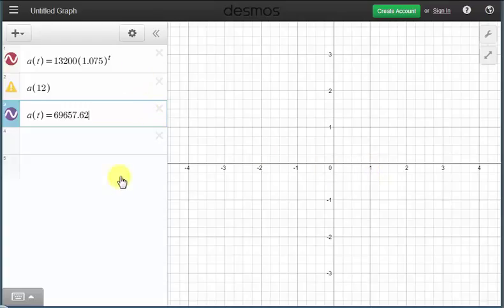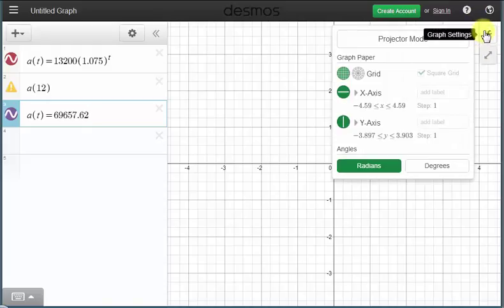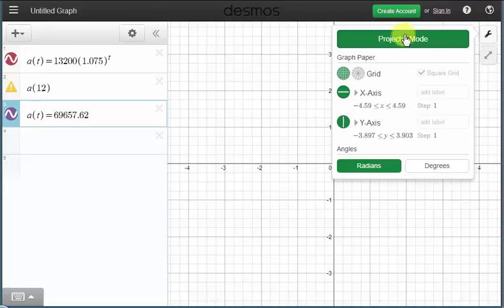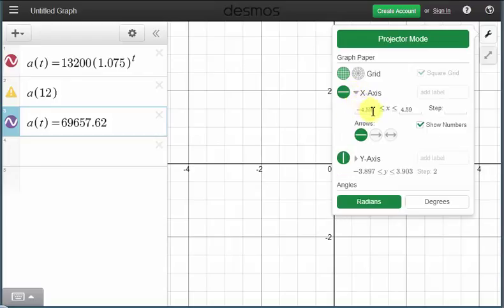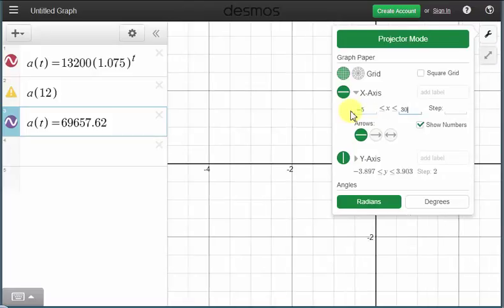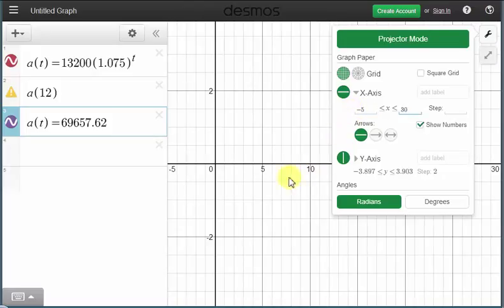Notice how we can't see either graph because we need to adjust the window. To adjust the window, we press this wrench, which is the graph settings. I think it's helpful to use projector mode. If you click on this, it'll be easier to see. And now to change the horizontal axis or x-axis, we can just change these values here. Let's change these from negative five to 30. The nice thing about this is notice how we can actually see the horizontal axis changing as we change these values.